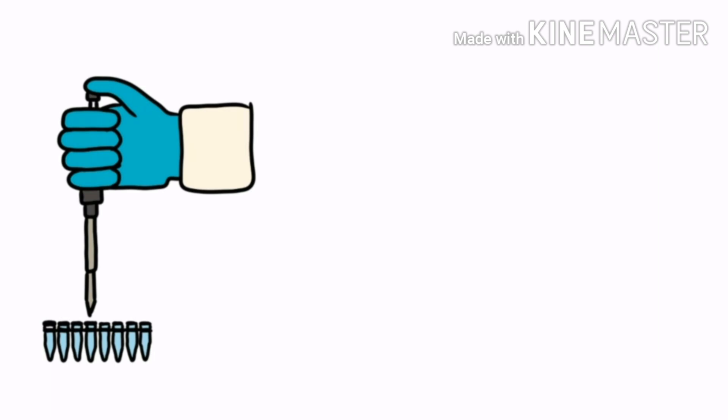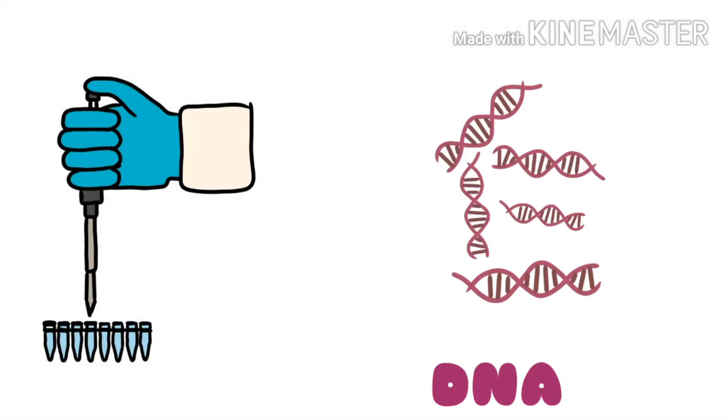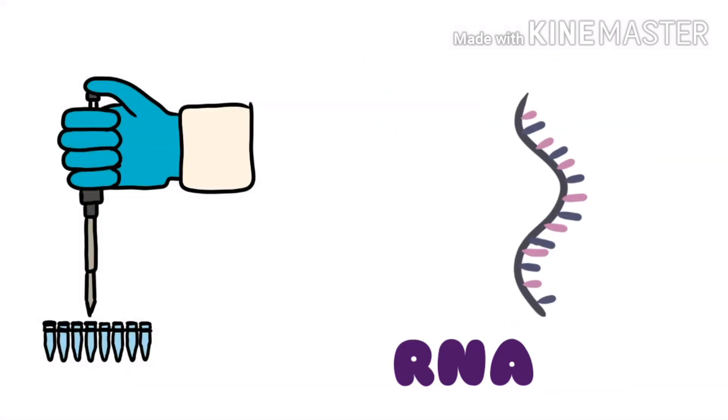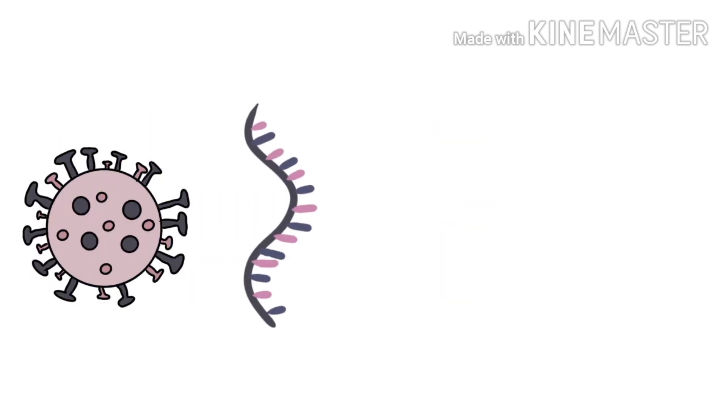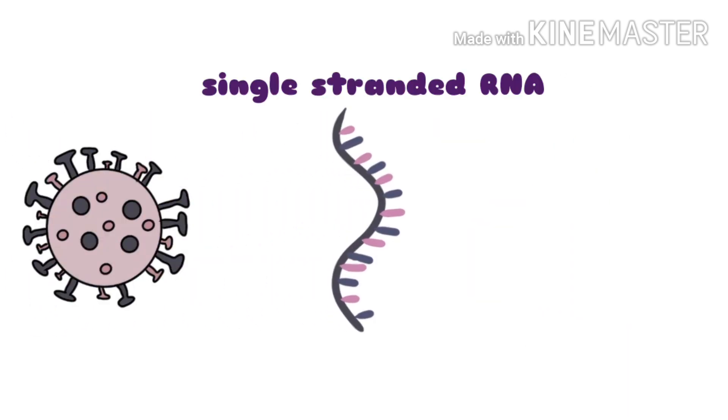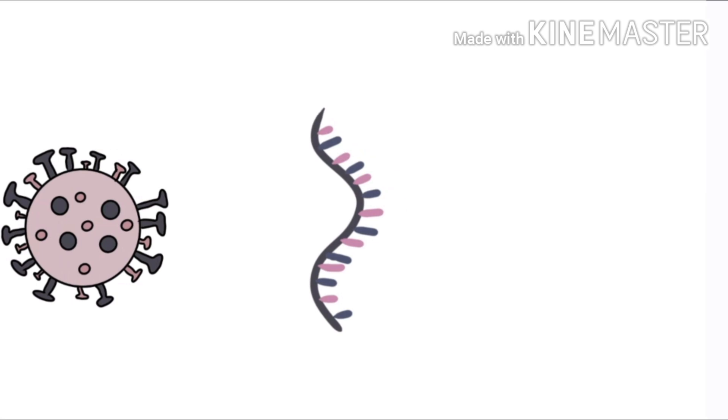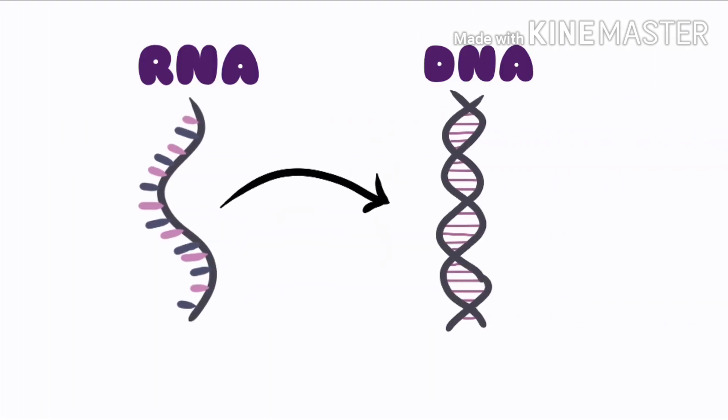But there is one setback to this process: it can only amplify the DNA sample, not the RNA one. Since the SARS-CoV-2 is a single-stranded RNA virus, we first have to convert the RNA of the virus into DNA to make the PCR work.